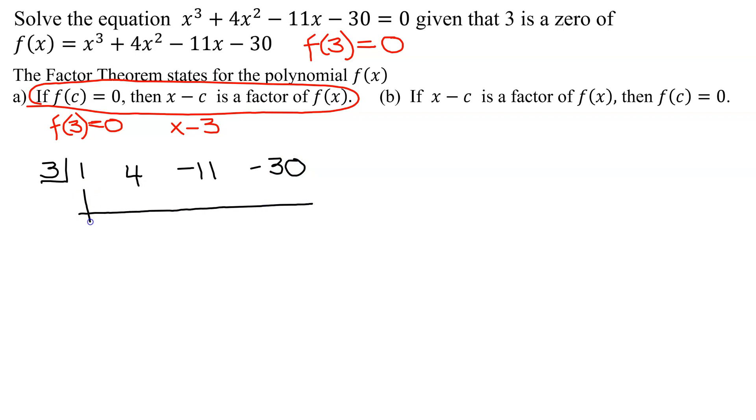Bring down the 1 and then you multiply 3 times 1 and get 3. Write the answer up here. Then you add 4 and 3 and get 7.